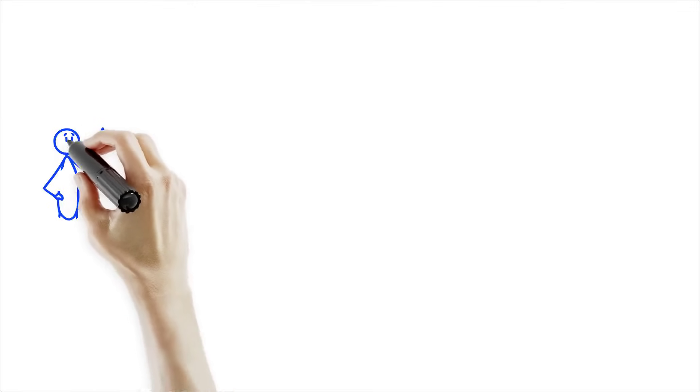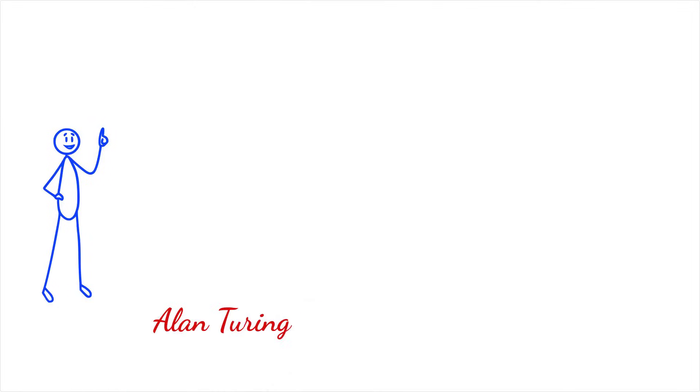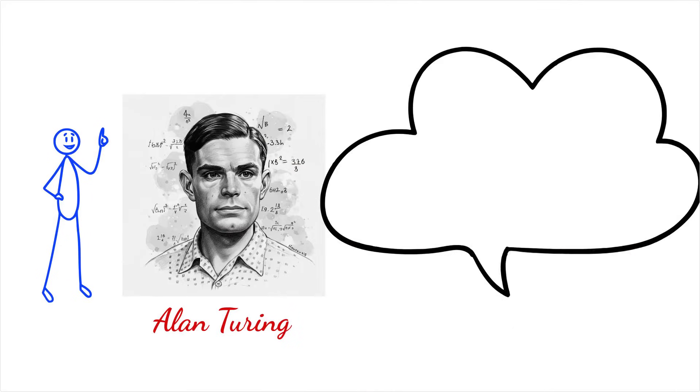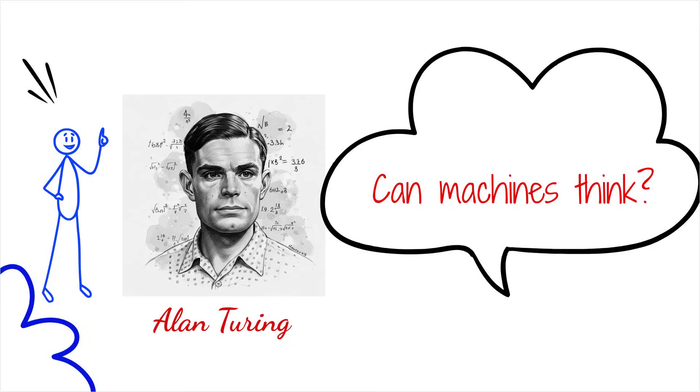Picture this. It's 1950. Alan Turing, a brilliant mathematician, wonders if a machine could ever mimic a human so perfectly that we couldn't tell the difference. He proposes this scenario: an interrogator talks with two hidden entities, a real human and a machine. If the interrogator can't guess which is which at least half the time, the machine passes the Turing test.